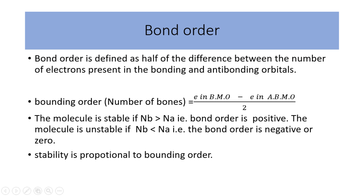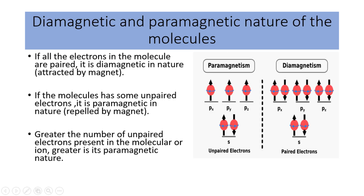The higher the positive bond order, the more stable the molecule. Second, molecular orbital theory reveals the diamagnetic and paramagnetic nature of molecules. If all the electrons in the molecule are paired, it is diamagnetic in nature and is attracted by a magnet. If the molecule has some unpaired electrons, it is paramagnetic in nature and is repelled by a magnet. As you see in the figure, the molecule with unpaired electrons is paramagnetic, and the greater the number of unpaired electrons, the greater its paramagnetic nature.